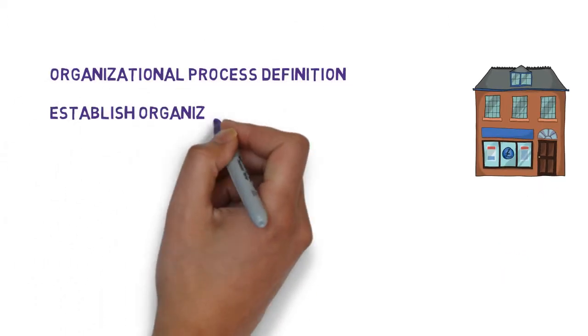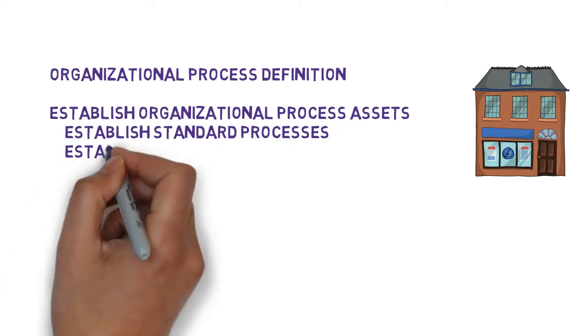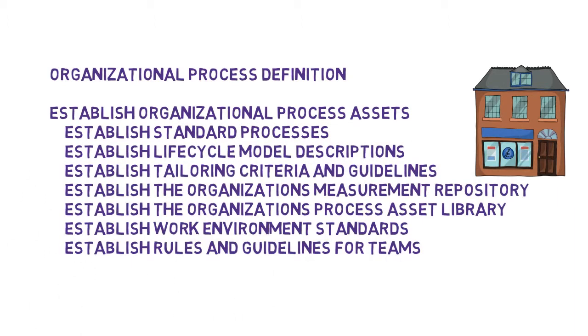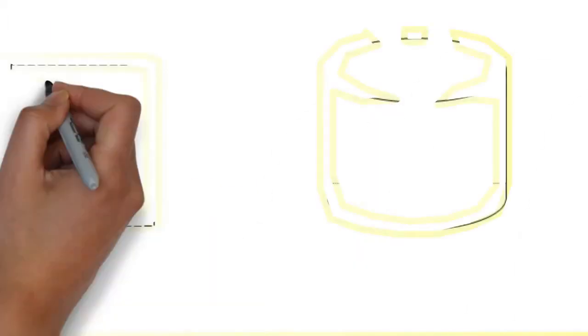You'll find standard processes and descriptions of approved life cycles, tailoring guidelines and criteria for making those tailoring choices, metrics from the projects that have been done to help you estimate accurately and manage your project, and a library of alternative ways to perform work that have been identified, evaluated, and shown to be effective. There are also some guidelines for what your standard work environment looks like and how to set up or participate on a project team.